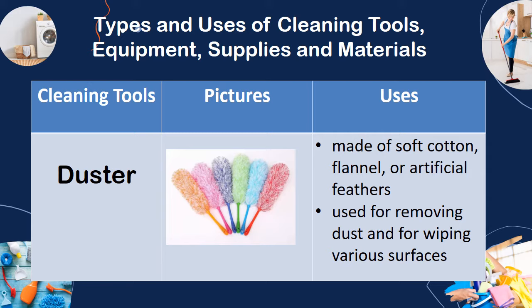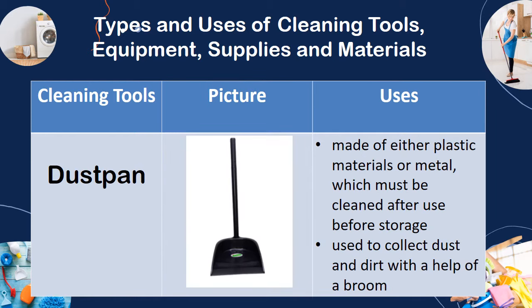First is the duster. It is made of soft cotton, flannel, or artificial feathers. It is used for removing dust and for wiping various surfaces. Dust pan — it is made of either plastic materials or metal, which must be cleaned after use before storage. It is used to collect dust and dirt with the help of a broom.